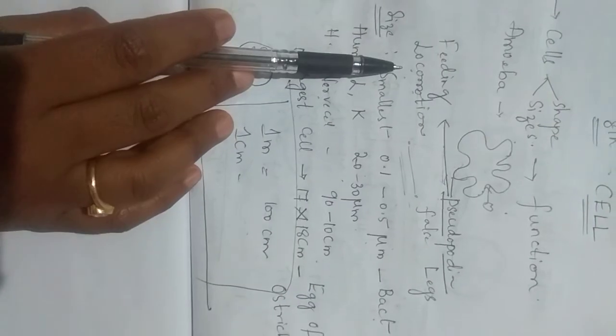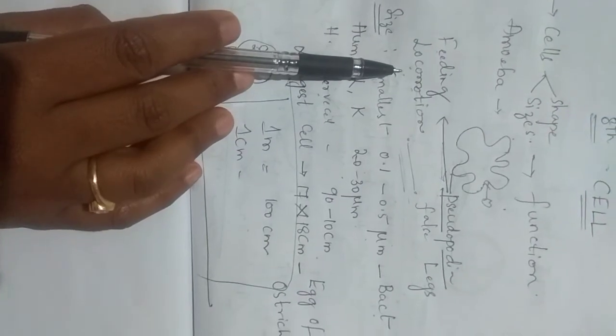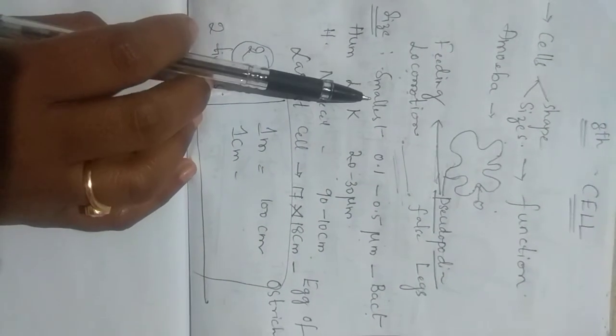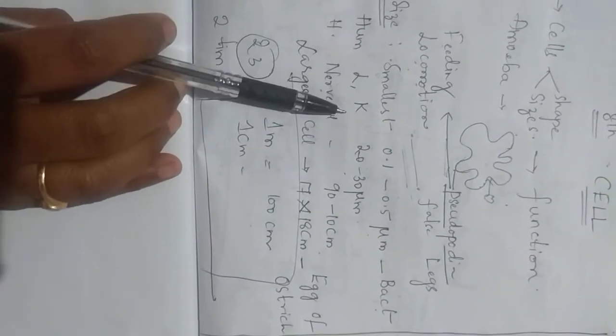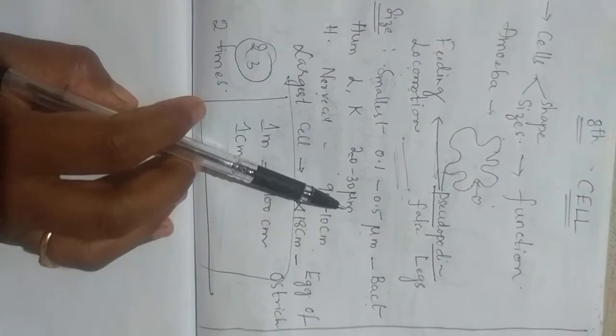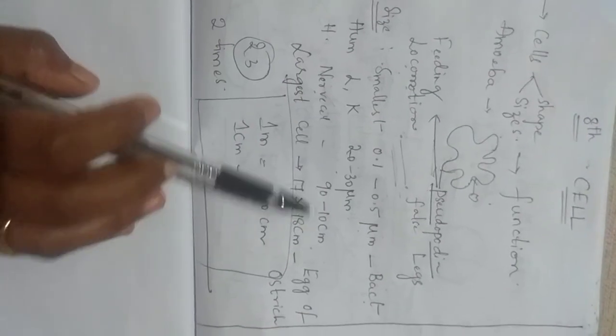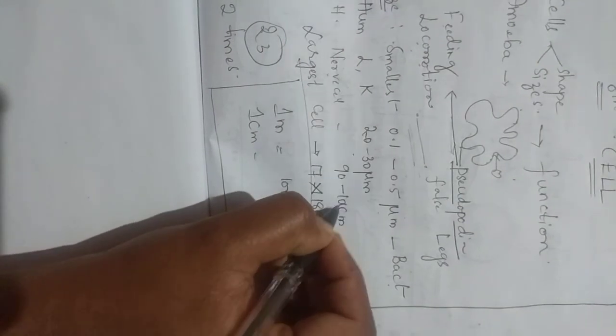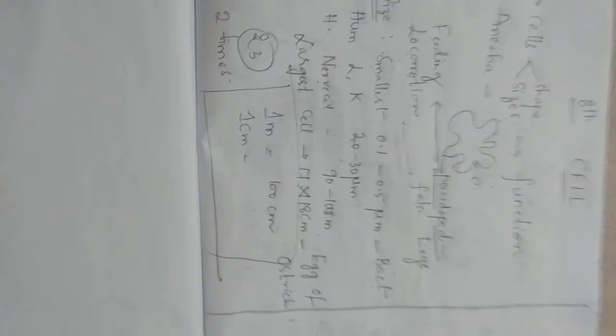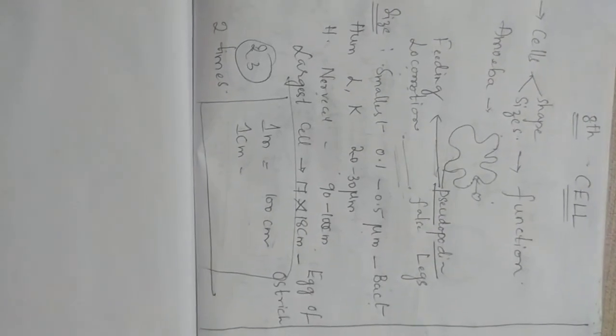Podia means legs. Pseudo-podia feeding के लिए और locomotion के लिए help करते हैं. Smallest cell bacteria में रहती है. Human liver and kidney का cell 20 to 30 micrometres, nerve cell 90 to 100 cm. And largest cell ostrich के egg में रहती है. यह box 2 times लिखो अपने assignment में.